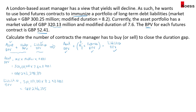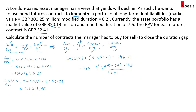Now we just need to calculate the number of futures contracts needed. Substituting the values: 243,298.8 plus the number of futures contracts times 52.41 equals 246,205. So the number of futures contracts equals (246,205 minus 243,298.8) divided by 52.41. The numerator is 2,906.2, which tells us we need to increase the asset BPV by £2,906.2 to close the gap.